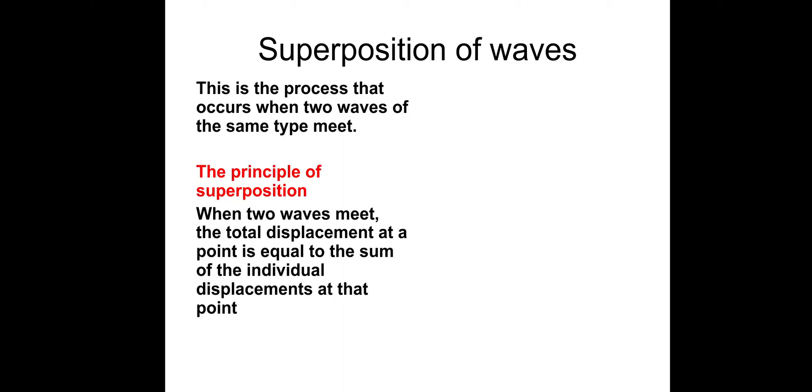It's the process that occurs when two waves of the same type meet in the same space. So the principle of superposition: when two waves meet, the total displacement at a point is equal to the sum of the individual displacements at that point. If two waves are doing the same thing at the same point in time in the same region of space, they will undergo reinforcement and their amplitude will increase. That's called constructive interference. And if they're doing the opposite thing at the same time, you'll get cancellation. That's complete destructive interference.